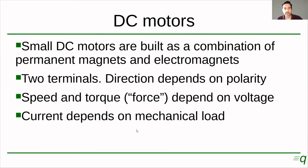Small DC motors usually come made of a combination of permanent magnets and electromagnets. They have two terminals on the outside and the direction depends on the polarity — you put positive on one side and negative on the other side and it will turn in one direction. If you reverse the polarity, it will turn in the opposite direction. Speed and torque depend on the voltage. So if you put a lower voltage it will turn at a lower speed and the motor will have less torque or less force. Remember, torque is like force but for rotating systems. And the current will depend on the mechanical load.